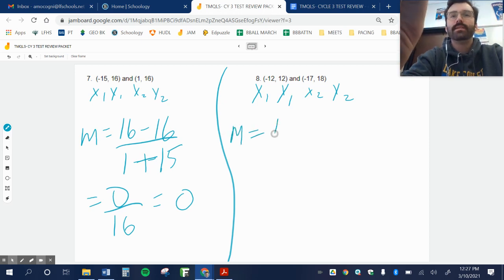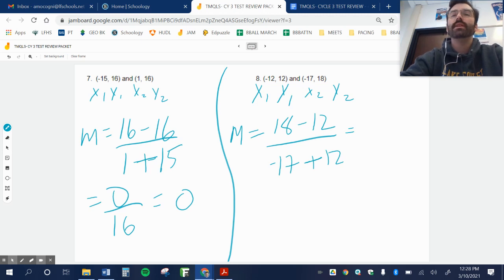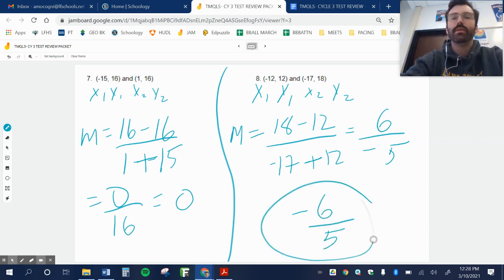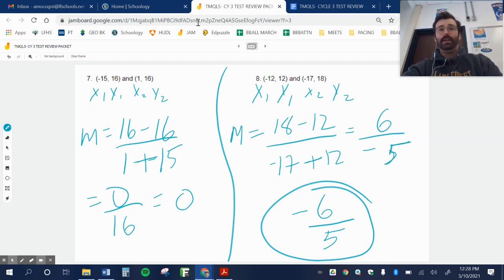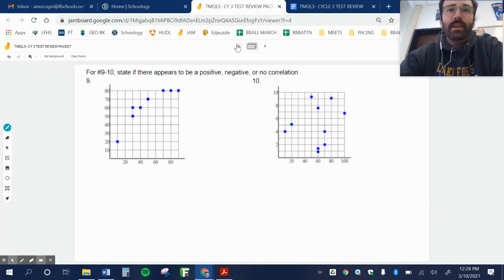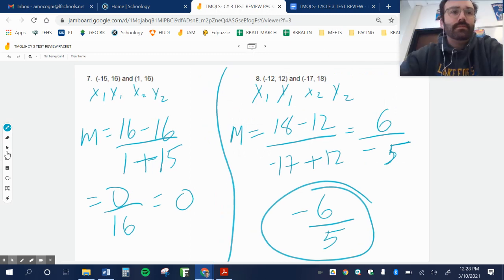Try this one. 18 minus 12 over negative 17 minus negative 12. Ooh, great breeze. 18 minus 12 is 6. 17, negative 17 plus 12 is negative 5. So our slope is negative 6 over 5. Remember, I can write the negative sign on top while the bottom is still, means the fraction is negative. And I'm going to pause there for this one.